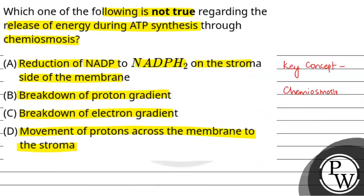So, coming back to the question. In the first option, the reduction of NADP to NADPH2 on the stroma side of the membrane, which we saw is true. Second, breakdown of the proton gradient. Yes, breakdown of the proton gradient. Third, breakdown of the electron gradient - this is not correct. And fourth, movement of protons across the membrane to the stroma. This is also true. So, the final answer for this question is option C. Hope you've understood well. Best of luck.